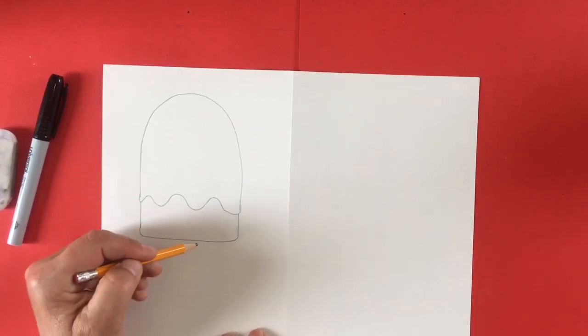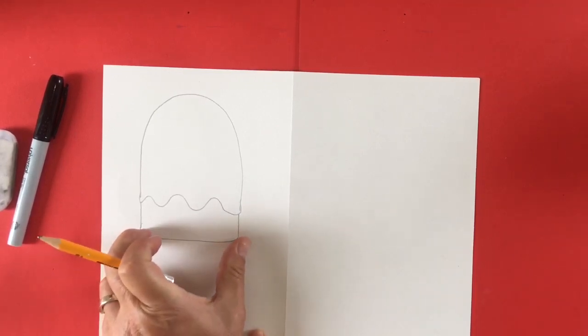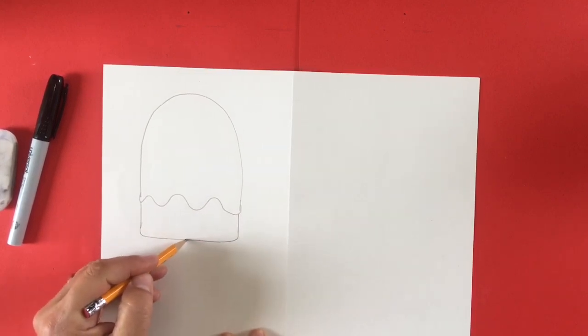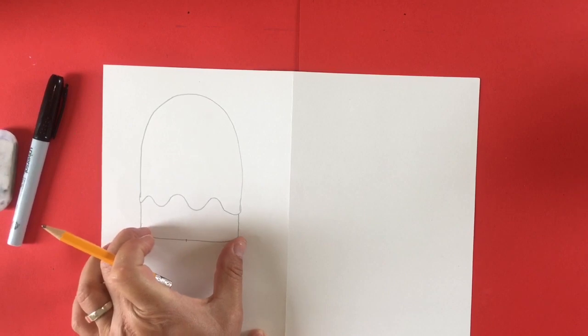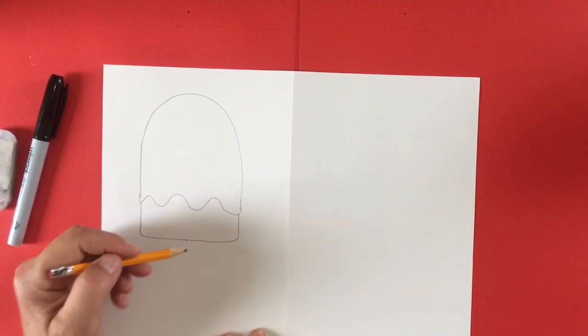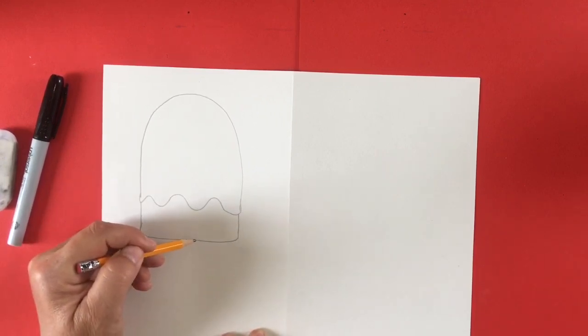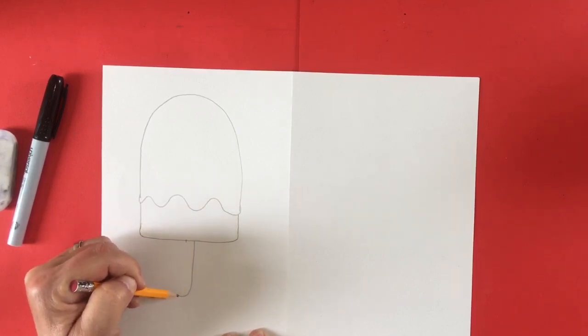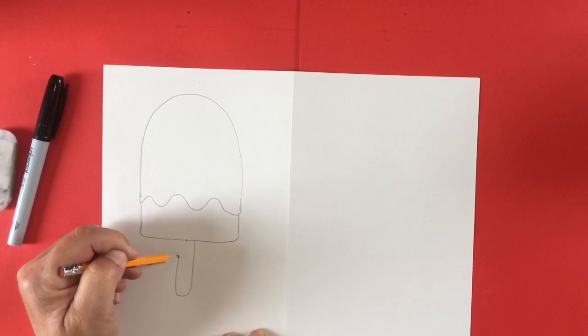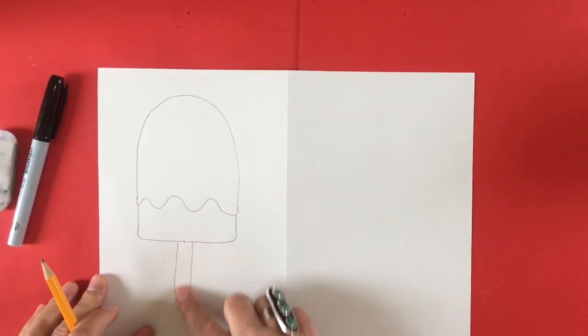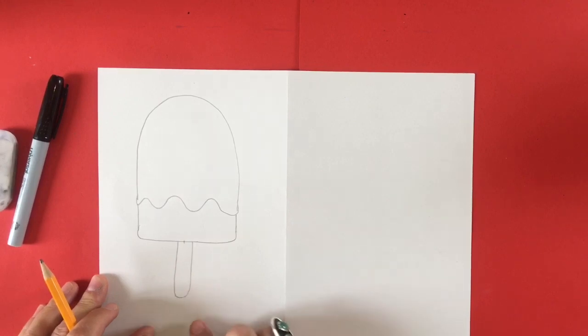Now it's time to draw the stick to our popsicle and that's going to go right in the center. The way to find the center is take your fingers and put one finger on one edge and your thumb on the other, and when they meet that is the middle of your popsicle. Here I'm making a little line so I know where the middle is and then I'm going to make a stick going down and drawing a loop. You will notice that dot or line I drew is in the middle of my stick.